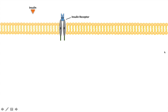Here is a typical cell, here's your plasma membrane, and here is an insulin receptor. An insulin receptor is a heterotetrameric structure — it's composed of four subunits: two extracellular alpha subunits and two transmembrane beta subunits.